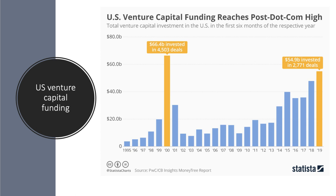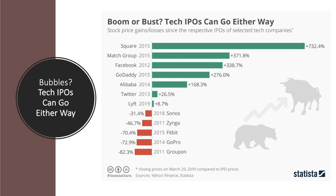This chart shows the amount of venture capital flowing into companies. You can see the surge in venture capital during the deal mania of 1999–2000, with over 4,500 deals. And again there's been a surge in 2019, with over $54 billion invested in over two and a half thousand deals in the United States.